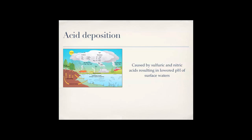If there is a lot of acid deposition in an area, fish generally prefer a natural pH around seven. When the pH goes down, it causes fish, other aquatic life, and plants to die. Sulfuric and nitric acids from non-point and point sources in the air can create acid deposition.